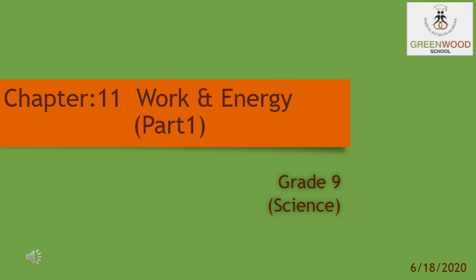Hello students, today we are going to discuss chapter number 11, that is Work and Energy. Under this chapter we are going to study in detail about work done, the various types of work done like negative, positive, and zero work done, energy, various forms of energy, their formulas, power, and the unit of power. These are the topics which we are going to discuss under this video.